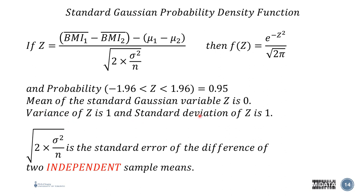Now the mean of the standard Gaussian variable is zero, of z is zero because we have standardized and the variance of z is one and the standard deviation of z is one and this term, so the denominator, is the standard error of the difference of two independent sample means. Now just remember that the variance is your spread, the standard deviation is the square root of your variance to bring it to the same units of what you're working with.